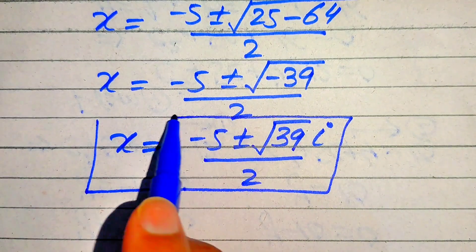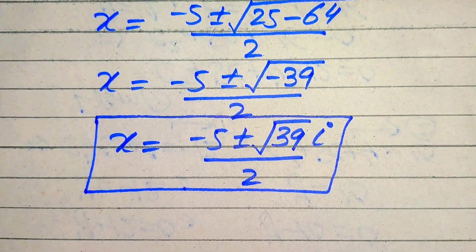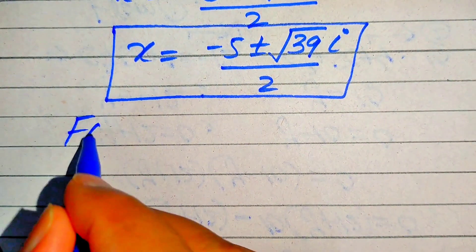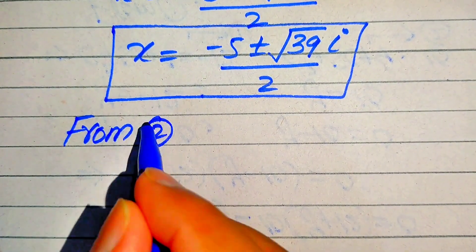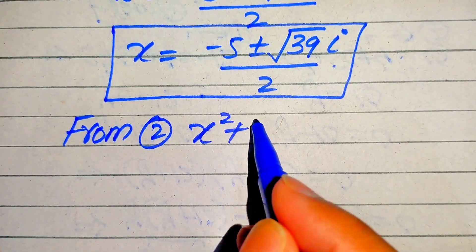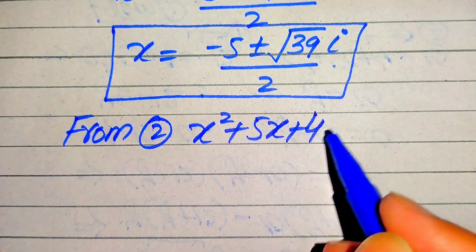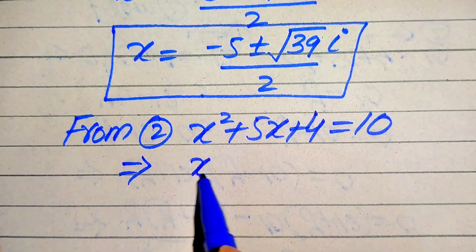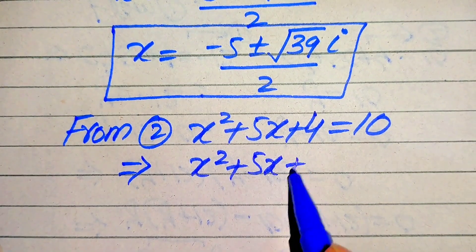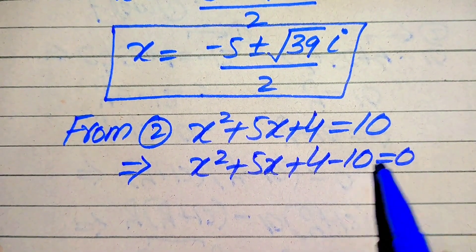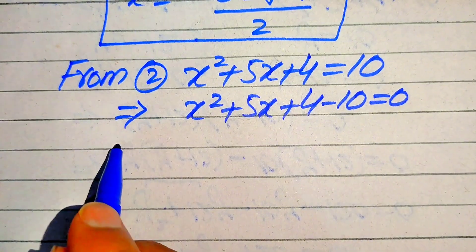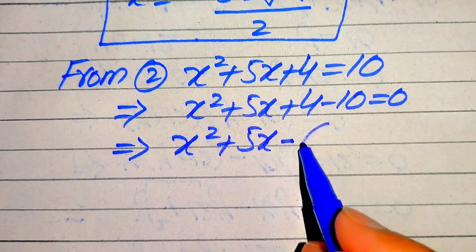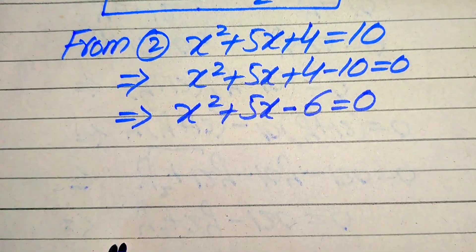These are the first two values of x, but they are complex values. Now for equation 2: x² + 5x + 4 = 10. Moving 10 to the left gives x² + 5x + 4 − 10 = 0, which simplifies to x² + 5x − 6 = 0.